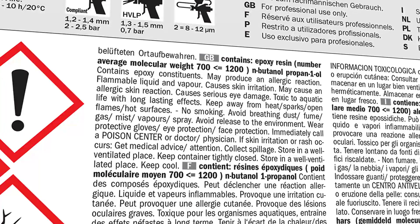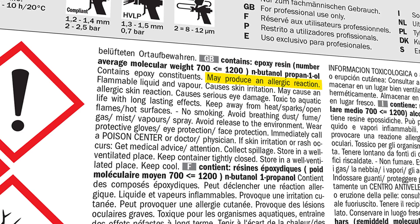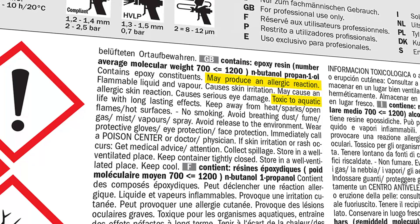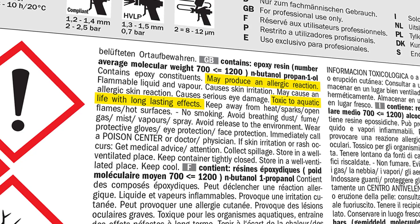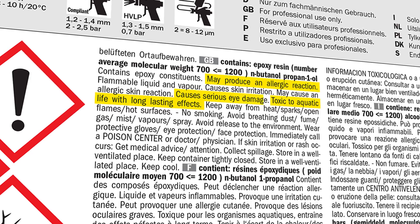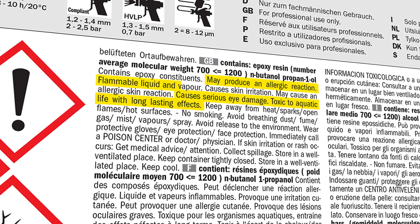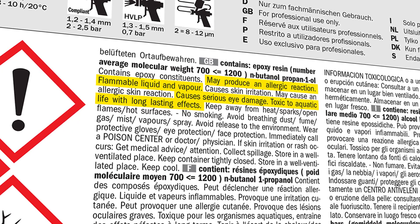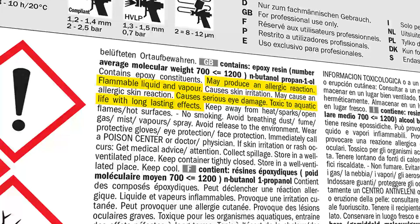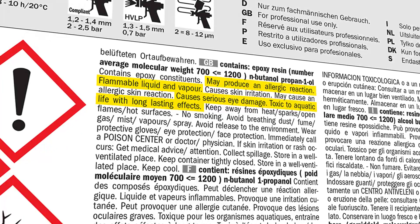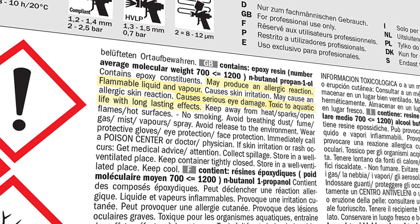For example, may produce an allergic reaction. Hazard statements are specific to the hazard classification categories and to the chemical. Users should always see the same statement for the same hazards, no matter what the chemical is or who produces it.